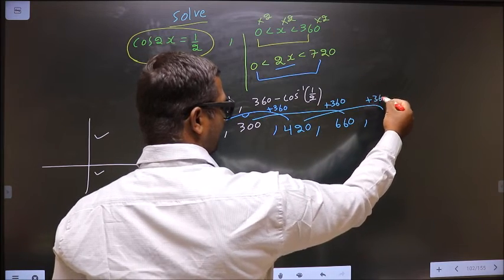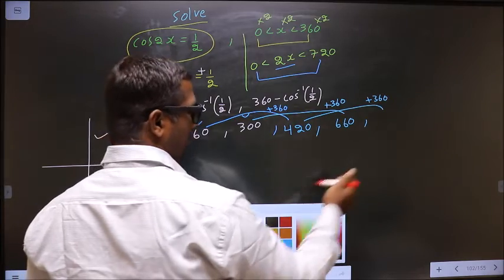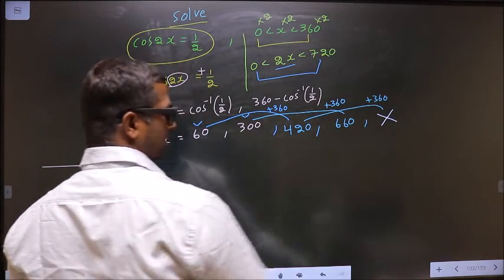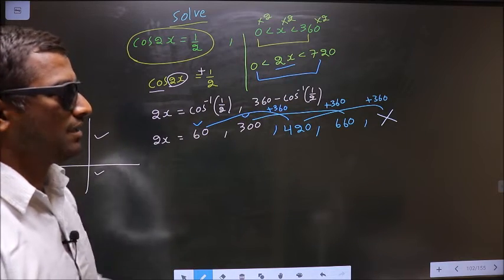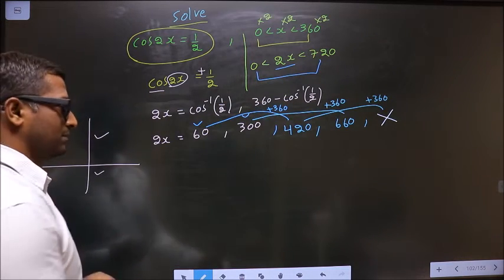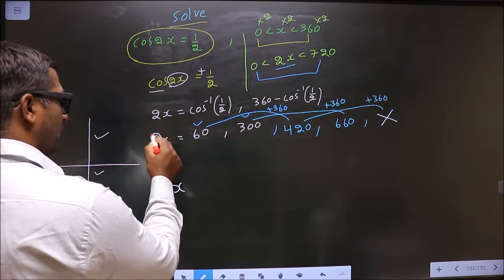To get another angle, add 360 to 420. That will not lie in this interval, so you don't need to find this. Only these values lie in this interval.